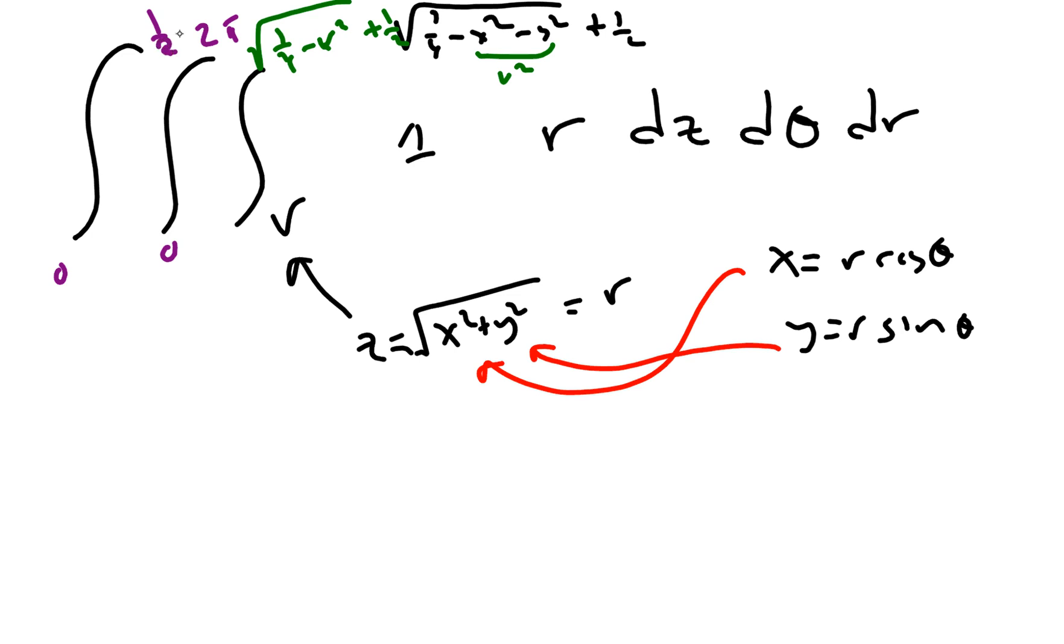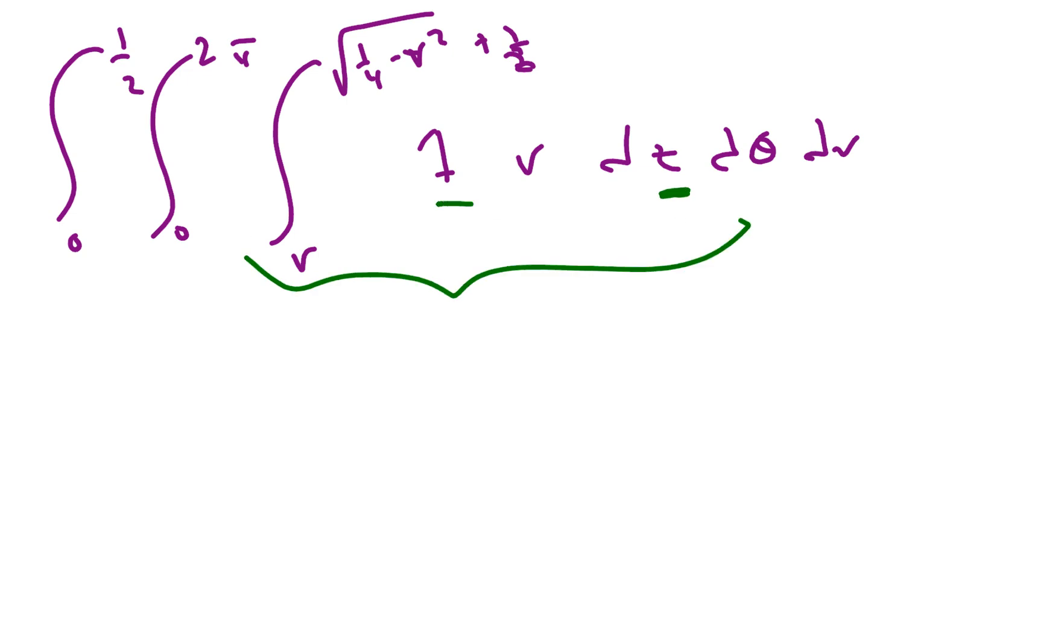So now we're ready to start computing this integral. Let's go to a new page and we write this one more time here: Zero to one half, zero to 2 pi, R to the square root of one fourth minus R squared plus a half, of one R DZ D theta DR. And here we go. Inside integral. It's actually really easy. Since Z is the variable, R doesn't vary at all. We just get RZ evaluated from R to this expression. But that's just going to give you R times the square root of one fourth minus R squared plus a half, and then minus R squared.